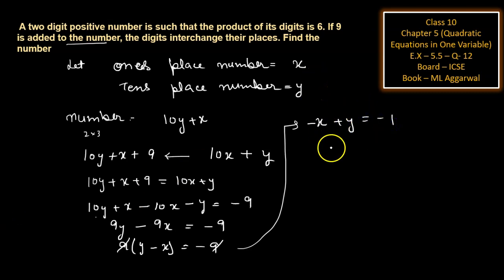Now from the first line, we have given that product of digits is 6. So x can be written as 6 divided by y.